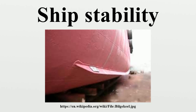Passive systems — Bilge keel: A bilge keel is a long fin of metal, often in a V shape, welded along the length of the ship at the turn of the bilge. Bilge keels are employed in pairs; a ship may have more than one bilge keel per side, but this is rare. Bilge keels increase the hydrodynamic resistance when a vessel rolls, thus limiting the amount of roll a vessel has to endure.